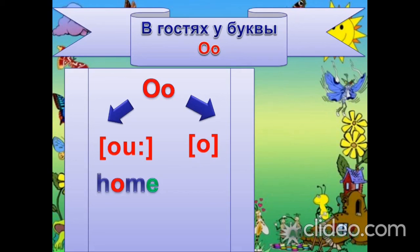Она не читается. Поэтому первое слово читаем — HOME. В закрытом слоге даёт звук О. Например, слово DOG.